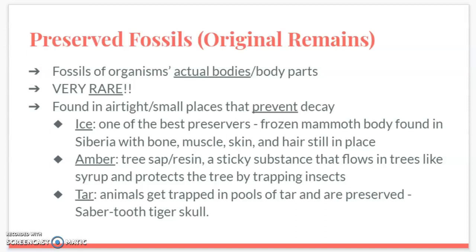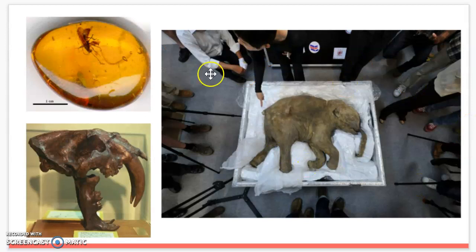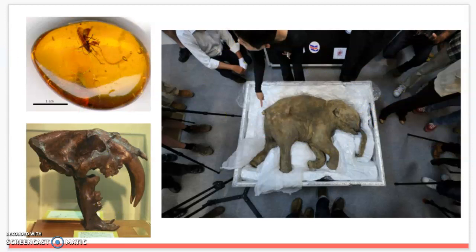The second substance is amber, which is tree sap or resin — very sticky, comes out of trees like syrup. Often an insect gets trapped in the amber, which then hardens into stone with the organism preserved inside. They have a lot of these at the Science Museum in North Carolina. The third substance is tar — animals can get trapped in pools of tar and preserved. Here we see the woolly mammoth found in ice, an insect in amber, and a saber-toothed tiger skull found in a tar pit in California.